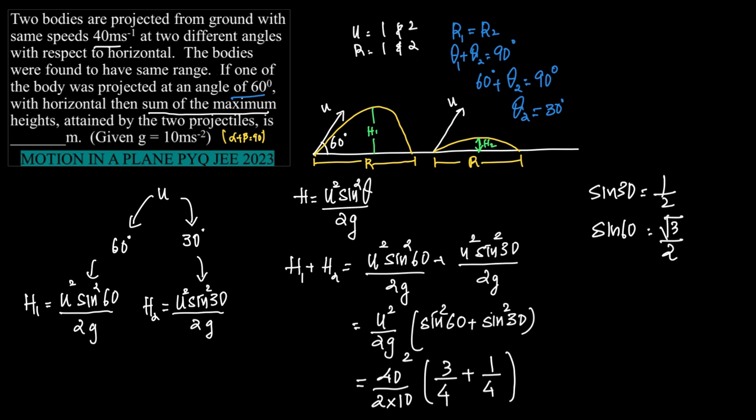So what we get is 3 by 4 plus 1 by 4 is 4 by 4 which is equal to 40 square into 4 by 2 into 10 into 4. So 4 by 4 is 1, 40 square is 1600 by 10 and it is 160 by 2 is 80 meters.